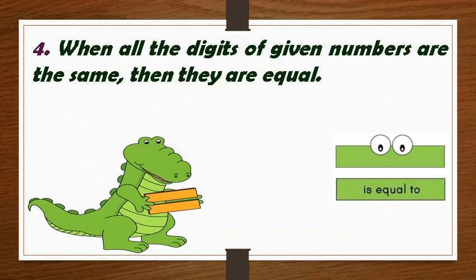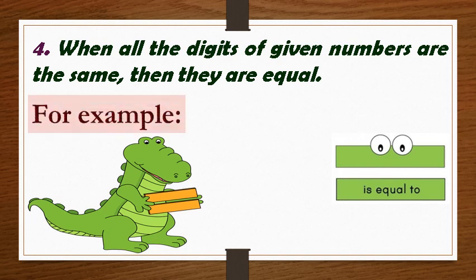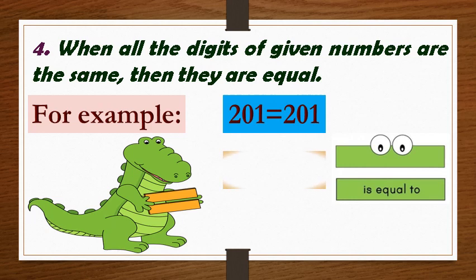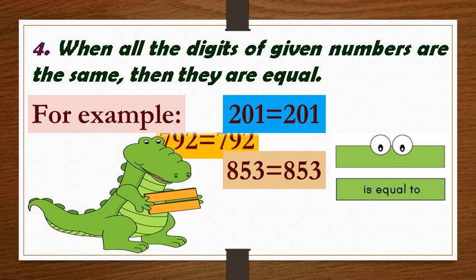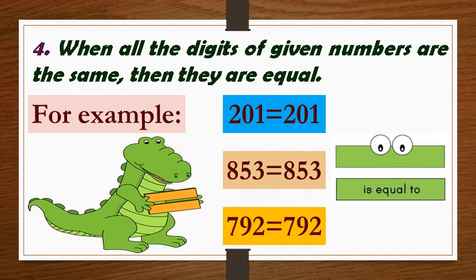When all the digits of given numbers are the same, then they are equal. For example, 201 is equal to 201. 853 is equal to 853. 792 is equal to 792.